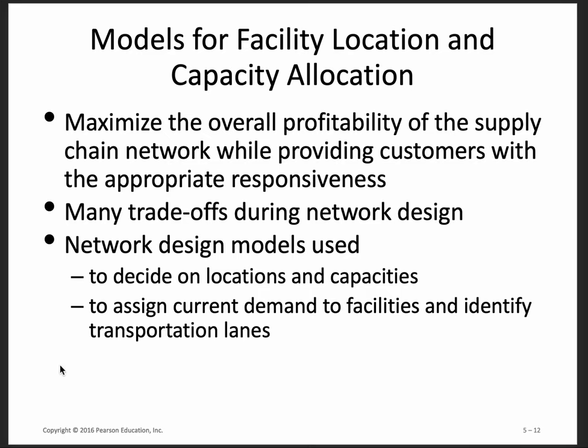The main idea behind the first video is to introduce you to supply chain network design. The models we're going to talk about fall into two categories: facility location models and capacity allocation models, and sometimes they do both at the same time. The idea is to maximize overall profitability of the supply chain, and to do this you have to make many trade-offs during network design. We use network design models to decide not just facility location but also capacities, to assign demand to facilities, and to identify transportation lanes — supersizing the transportation and transshipment models we covered before.